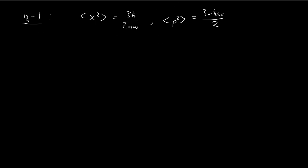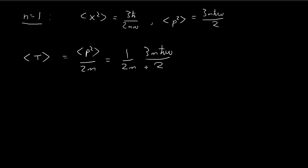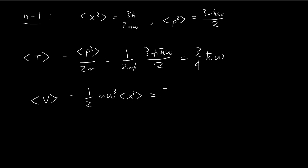Now we do the same thing for n equal to 1. We repeat the same process: find the expected value of kinetic energy by applying the definition, and substitute everything in. There's no fancy mathematics — we just substitute the appropriate expressions. For potential energy, we apply the same expression as before and substitute in the expected value of x².